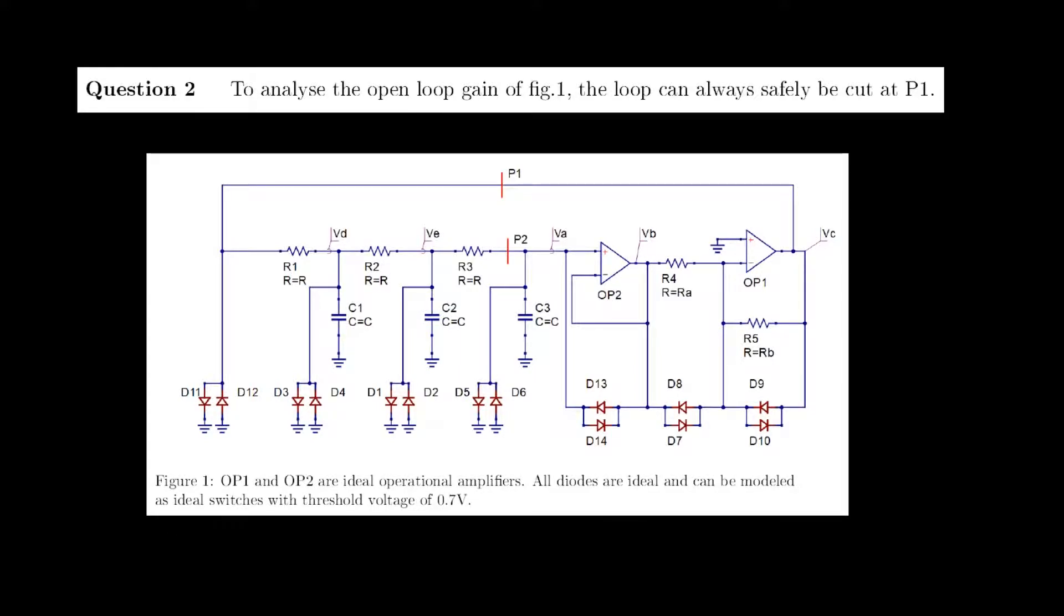This video will discuss the solution to question 2, which is a true-false statement that goes as follows: To analyze the open loop gain of figure 1, the loop can always safely be cut at p1.